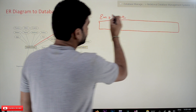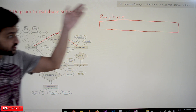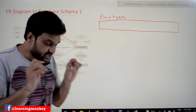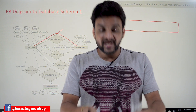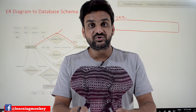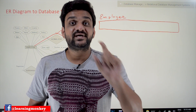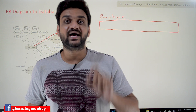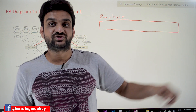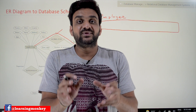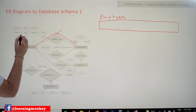The attributes of an entity type are represented as the columns of the relation. One very important point to note is that every attribute — every column in a table — should be atomic or simple attributes. They should not be composite attributes and they should not be multi-valued attributes. All attributes should be simple attributes.